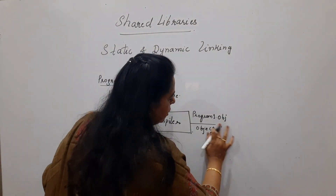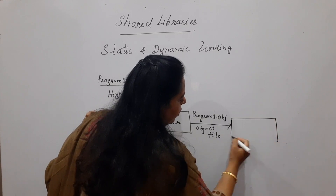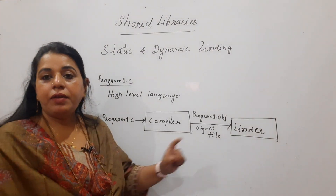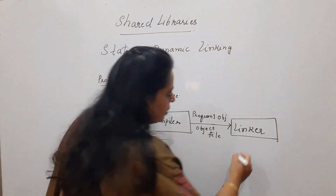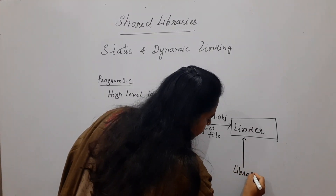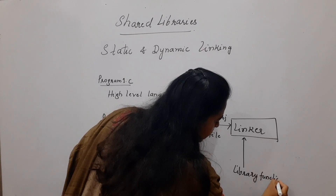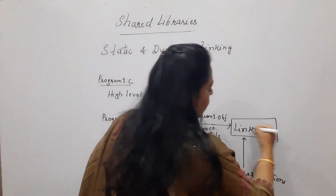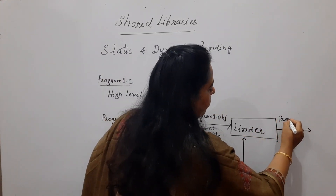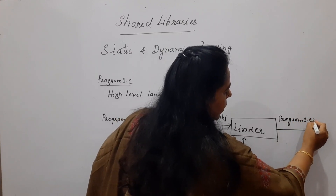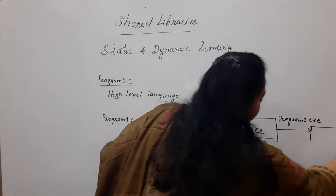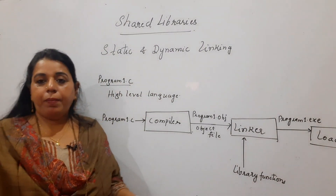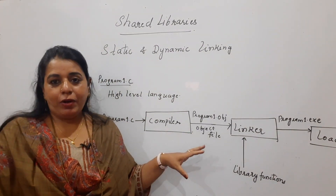At this stage, another software called the linker comes into the picture. The linker's job is to link the required library functions to the object code. All library functions needed by the program are linked by the linker, producing an executable file (program.exe). Finally, a module called the loader loads that program into main memory for execution. This is the standard flow.